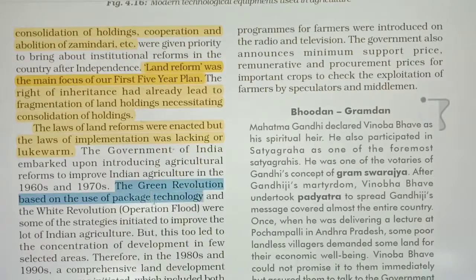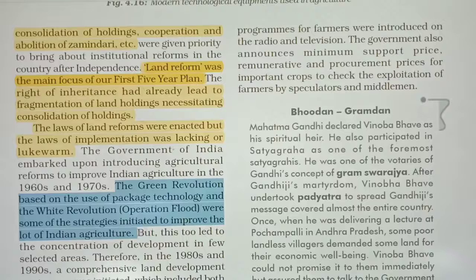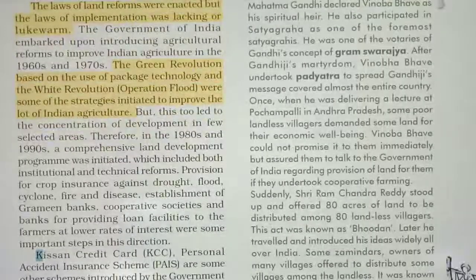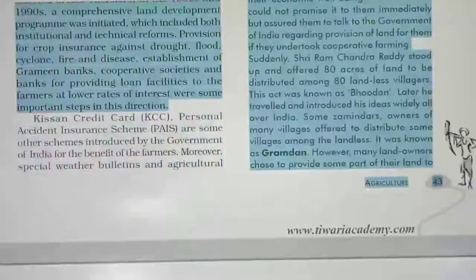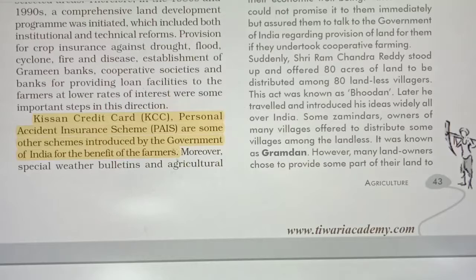The Green Revolution, based on package technology, and the White Revolution under Operation Flood were some strategies initiated to improve Indian agriculture. The Green Revolution was mainly for rice and wheat, while the White Revolution was mainly for increasing milk production. The government also introduced the Kisan Credit Card and Personal Accident Insurance Scheme for the benefit of farmers.